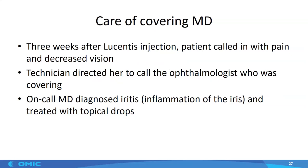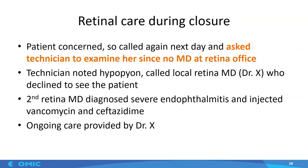As directed, the technician contacted the on-call ophthalmologist who was covering. That physician examined the patient and diagnosed iritis — inflammation of the colored part of the eye — and treated her with topical drops. The patient was very concerned about her eye and called again the next day. She knew there was no physician in the office but asked the technician to examine her, and the technician agreed. When she saw the patient, she found a hypopion, which is a sign of either a very serious infection or inflammation. She called a local retina physician, Dr. X, who declined to see the patient despite hearing this history. She finally found a different retina physician who diagnosed severe endophthalmitis and injected antibiotics.